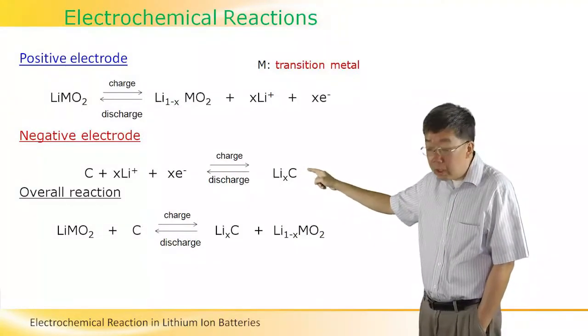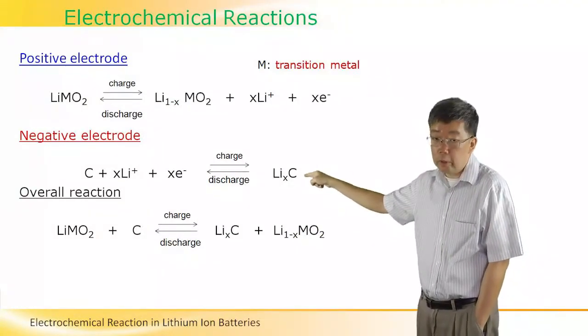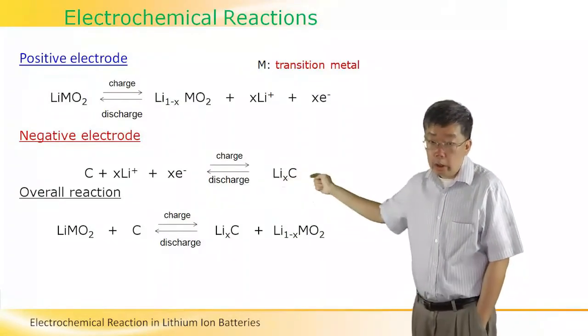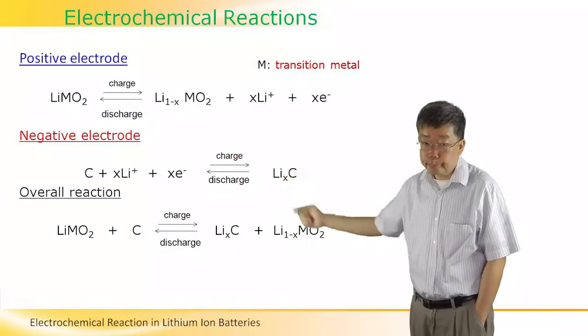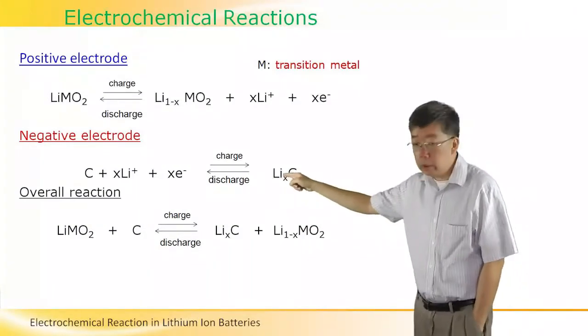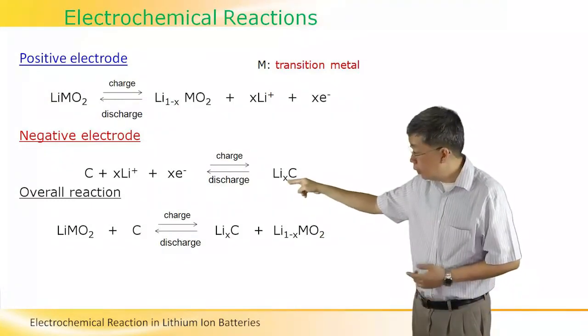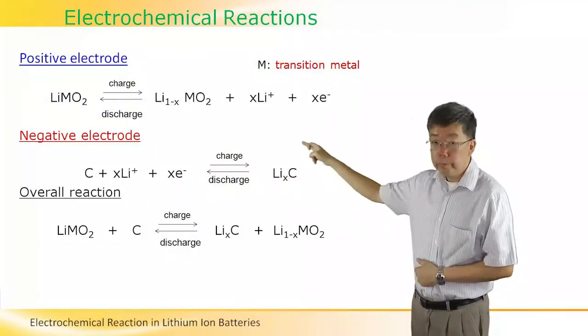The lithium dilithiated graphite electrode will be oxidized to carbon and lithium ions, and the lithium ions will move back to the positive electrode.